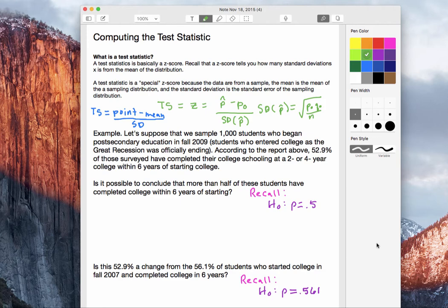In our case, a test statistic is just a special z-score because we're specifically using data from our sample and we're comparing our proportion against the mean of the sampling distribution. And the standard deviation is the standard error from that sampling distribution. So specifically, we're working all with sampling distributions because we've taken a sample.